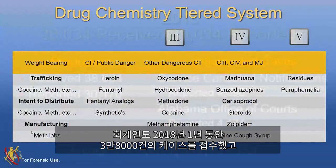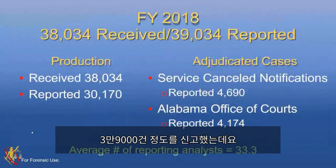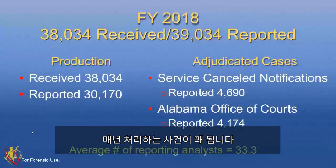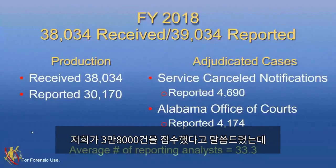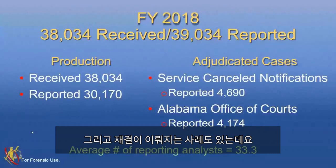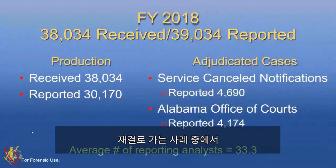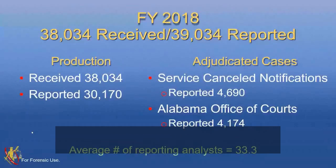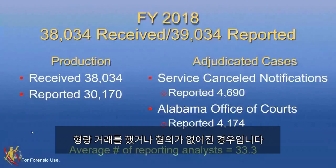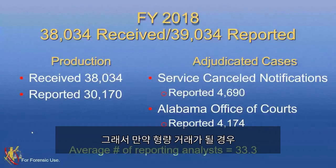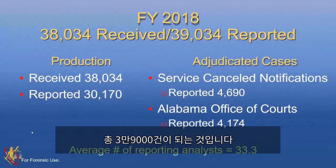For fiscal year 2018, we received 38,000 cases and reported about 39,000. Of those, 30,000 went out with a report of a controlled substance. We also had about 4,600 cases come in as service canceled — they either pled, charges got dropped, or our office of courts told us the case had already gone through the court system. That's how we received the 39,000 we were able to get reported out.